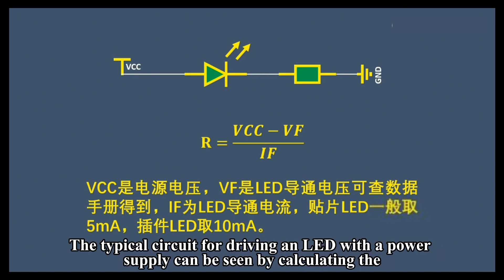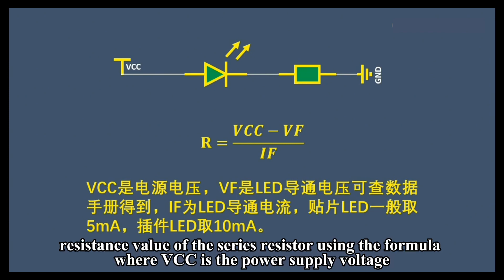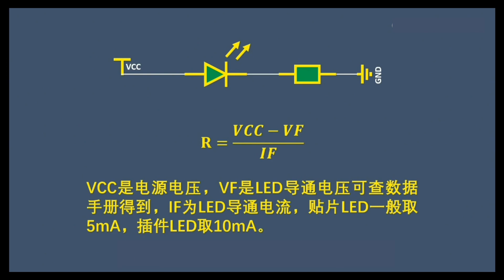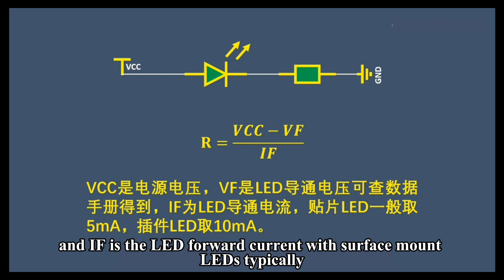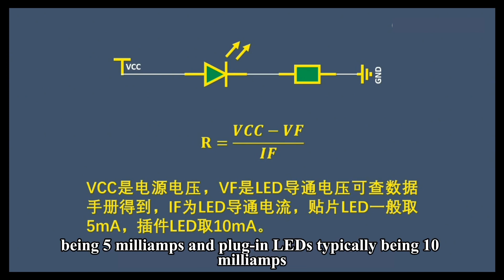The typical circuit for driving an LED with a power supply can be seen by calculating the resistance value of the series resistor using the formula where VCC is the power supply voltage, VF is the LED forward voltage which can be found in the datasheet or based on experience, and IF is the LED forward current, with surface mount LEDs typically being 5 milliamps and plug-in LEDs typically being 10 milliamps.